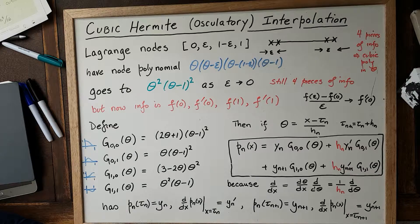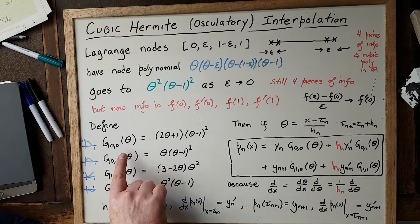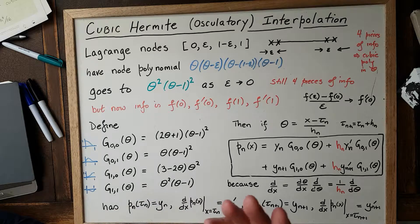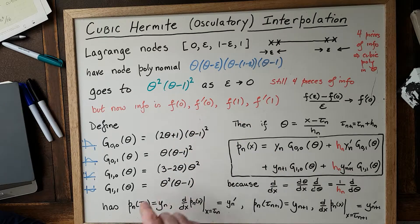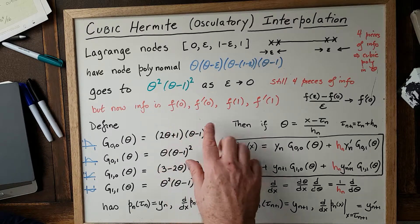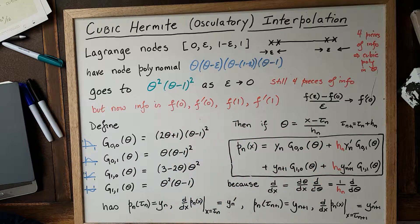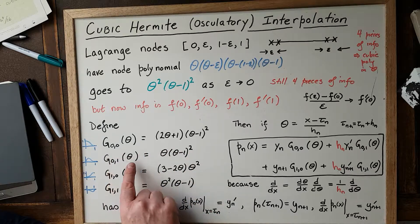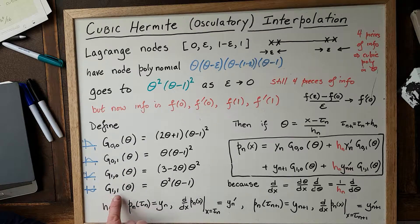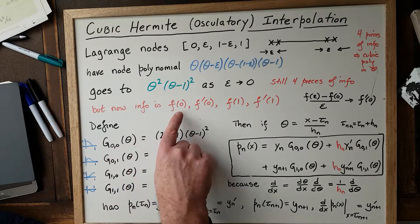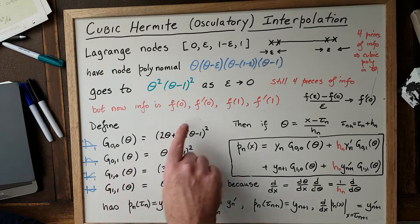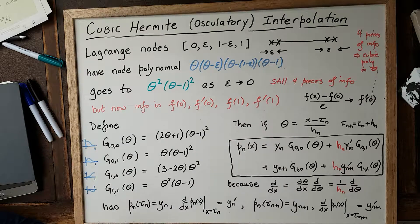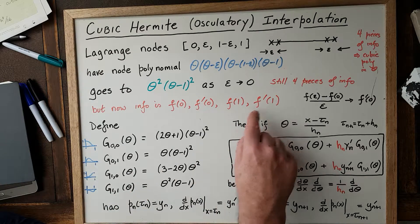We're going to find polynomials in theta that are like the Lagrange polynomials — they're going to be one when we want to use one of these bits of information, and zero where all the other bits of information are provided. Let's define four cubic polynomials: G₀,₀, G₀,₁, G₁,₀, and G₁,₁. G₀,₀ is useful for the function value at zero; G₀,₁ for the derivative at zero; G₁,₀ for the value at one; and G₁,₁ for the derivative at one.